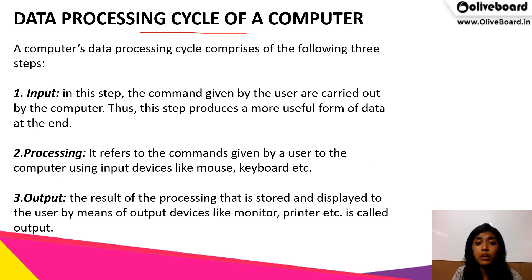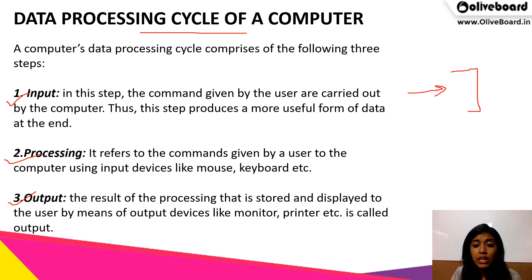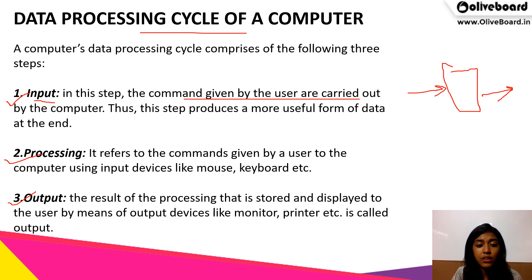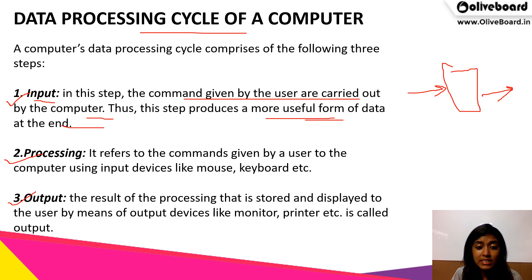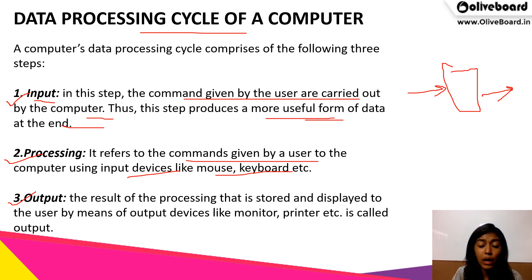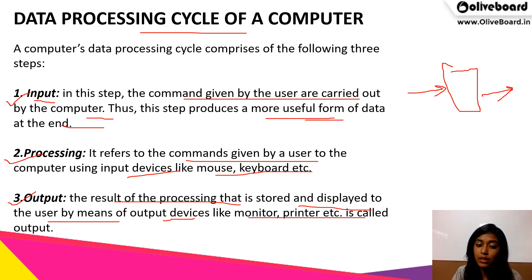The data processing cycle of a computer consists of 3 steps: first is input, second is processing, and third is output. When we feed in details or commands given by the user, the computer takes it, processes it, and then the outcome comes out as output. Input is the step in which the command is given by the user and carried out by the computer. Processing involves commands given via input devices like mouse, keyboard, etc. Output is the result of processing, stored and displayed via output devices like monitor, printer, etc.